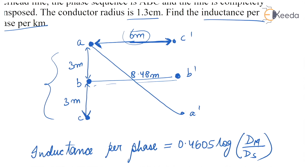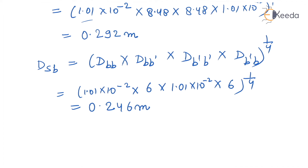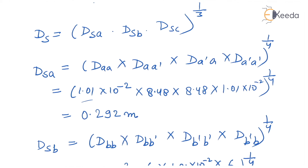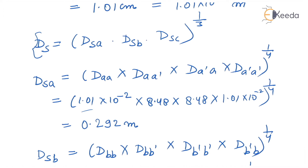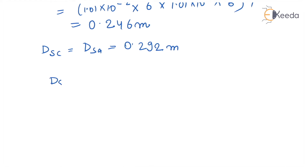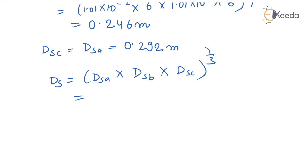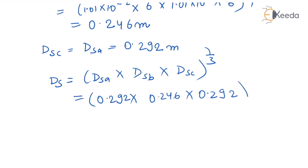Now, DSa and DSc have the same distance, so DSc equals DSa equals 0.292 metres. Putting the values of DSa, DSb, and DSc for calculating the equivalent self GMD: Ds equals (DSa × DSb × DSc) to the power 1 by 3, which is (0.292 × 0.246 × 0.292) to the power 1 by 3.